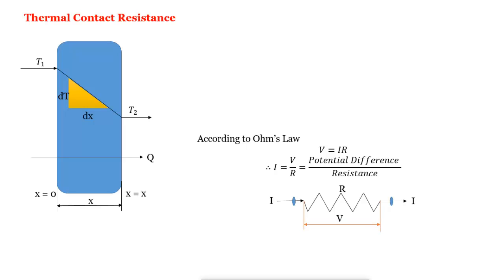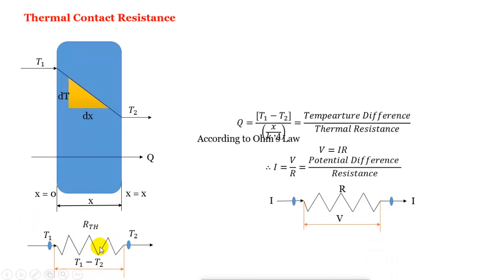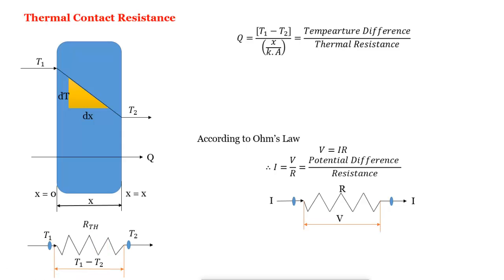In the same manner, in the slab, if we maintain T1 temperature at one side and T2 temperature on the other side, means a Q is flowing in this manner. Means Q is analogous to I. Potential difference is analogous to temperature difference. And R is analogous to RTH. So our Q equation will be T1 minus T2, that is temperature difference, upon the thermal resistance. Means this x upon k A, we call it as thermal resistance. So that will equal to Q equal to T1 minus T2 upon RTH. Our RTH will be x upon k A.